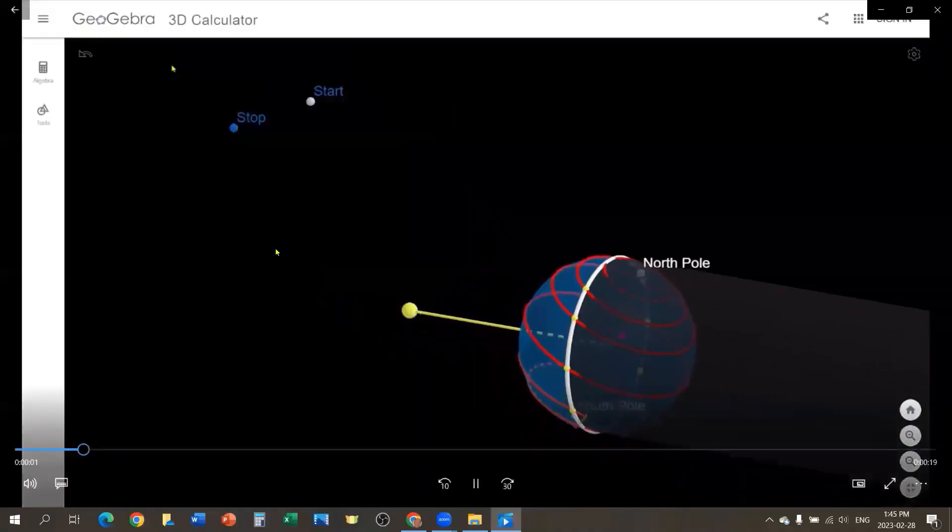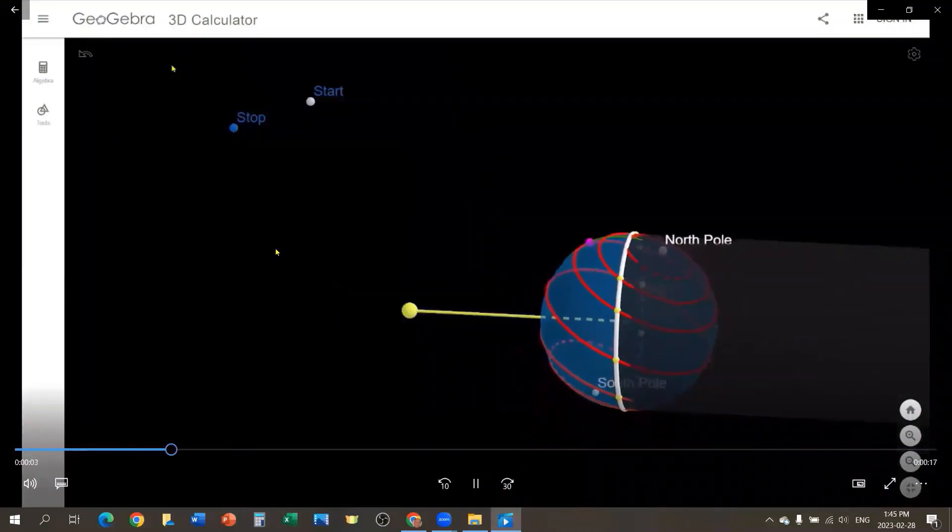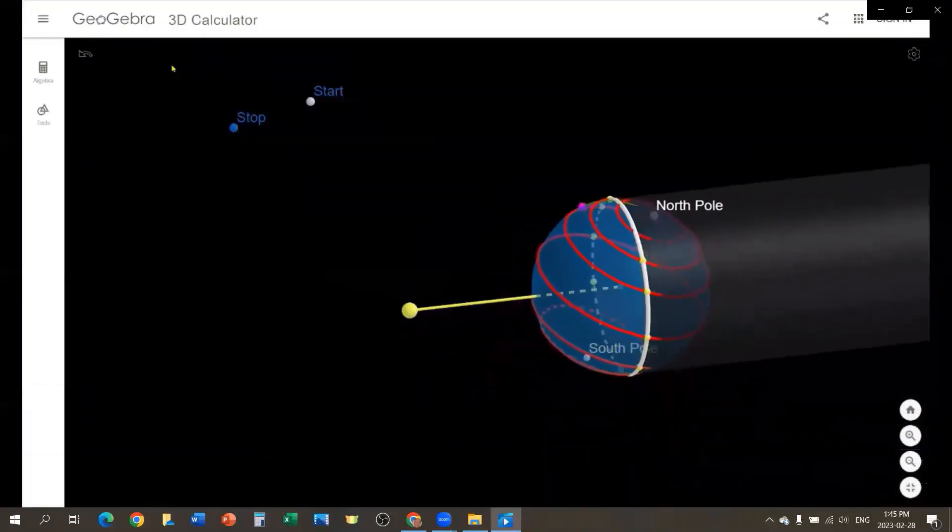Let's take a look. Here we can see that the division between daytime and nighttime is marked by the white circle.